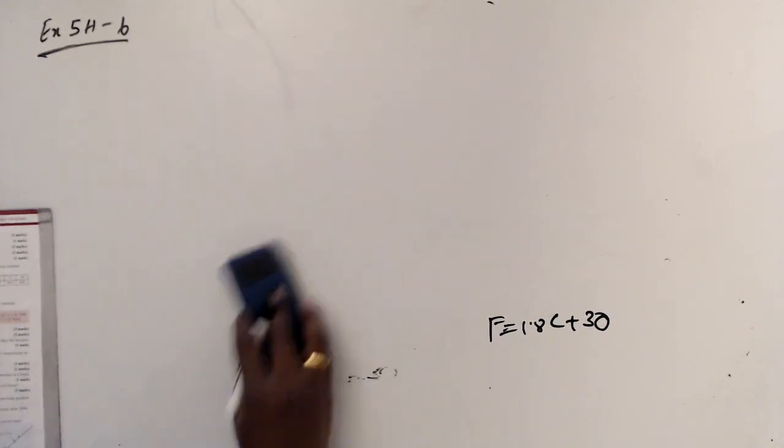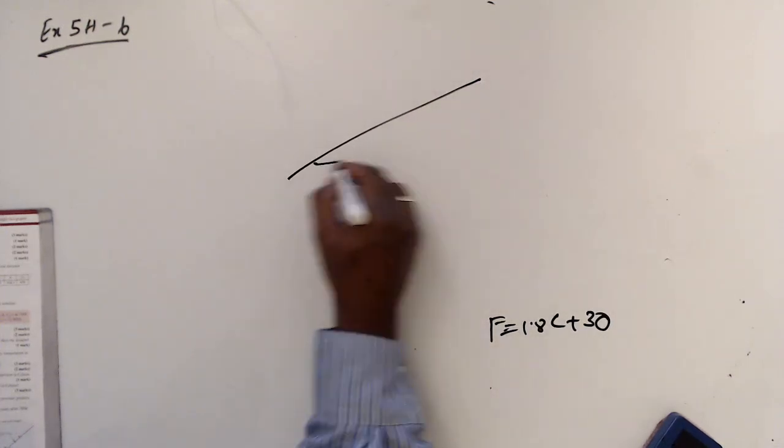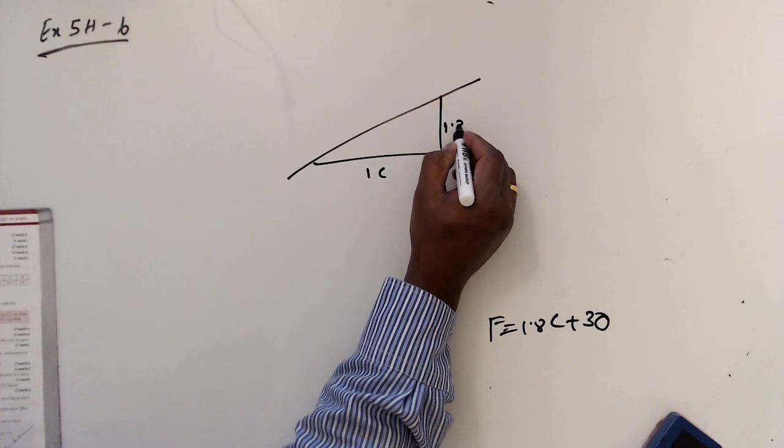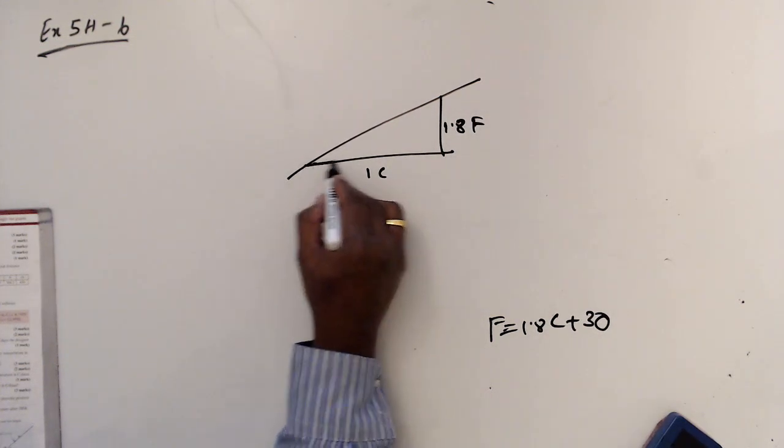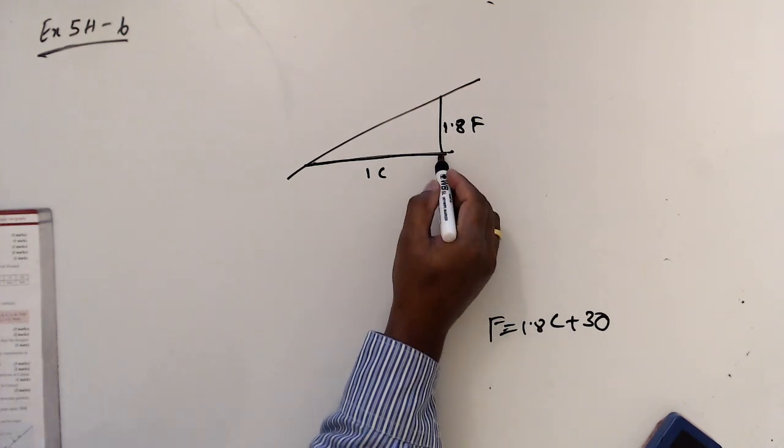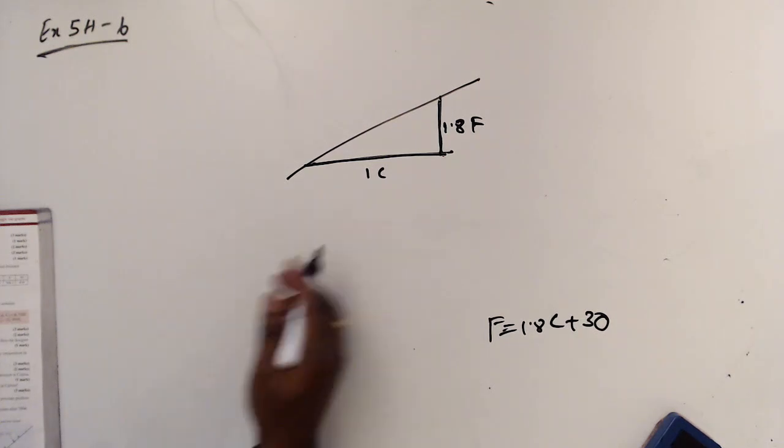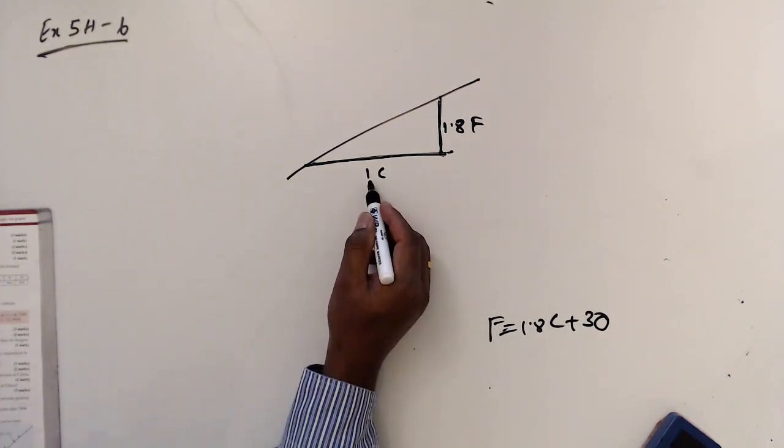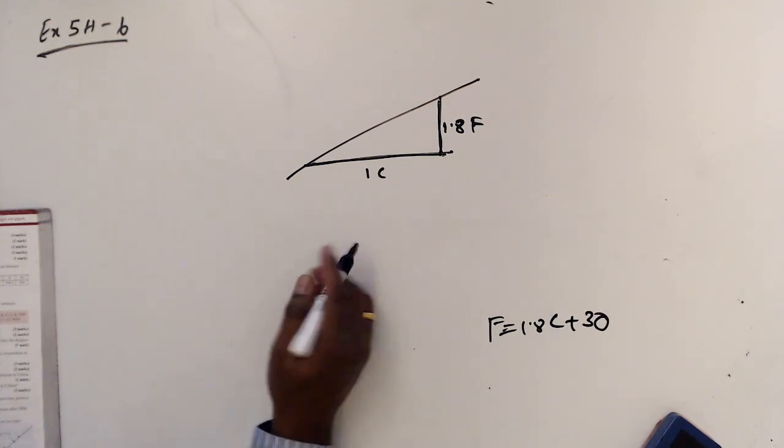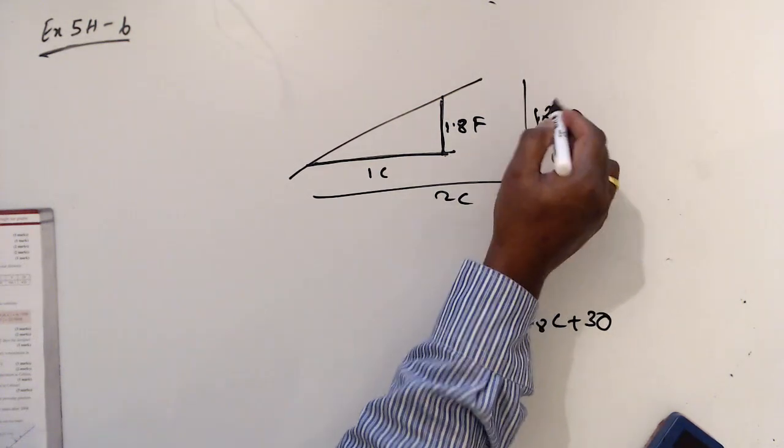Now the next question is interpret the value of A and B. Value of A means when 1 Celsius is increased, 1.8 Fahrenheit increases. 1 Celsius means 1.8 Fahrenheit. 2 Celsius means 1.8 times 2.